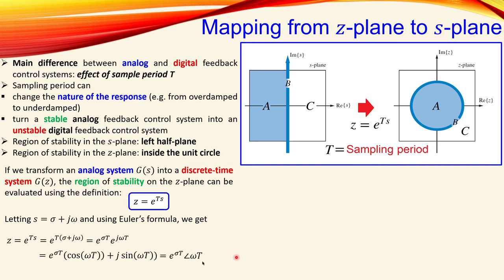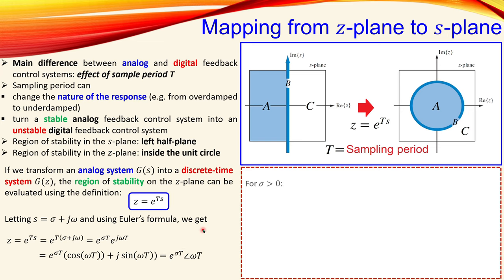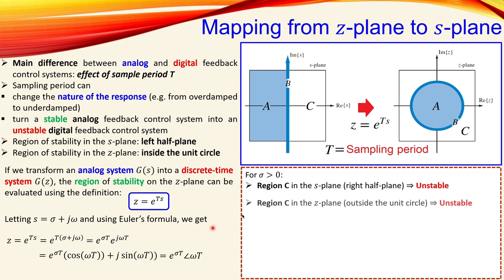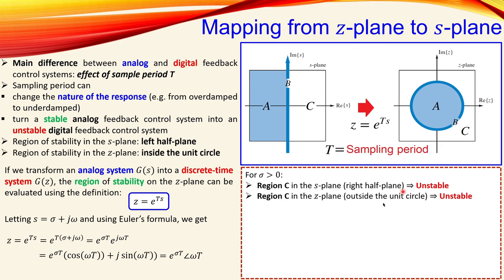The term e^(σT) is just a real number since σ and T are both numbers. The complex expression e^(jωT) has amplitude one and a phase determined by ωT in radians. Now checking the effect of σ: if σ is greater than zero, that positive value means we're in the right half of the s-plane — the unstable region — and correspondingly outside the unit circle in the z-plane, which is also unstable.